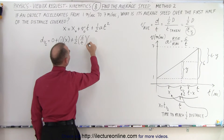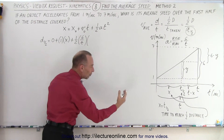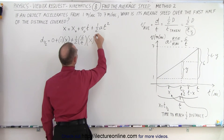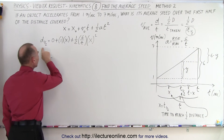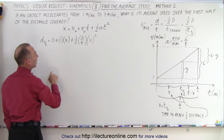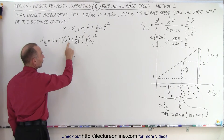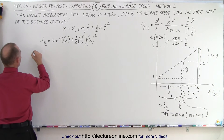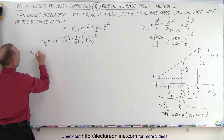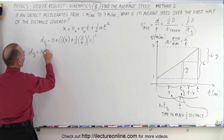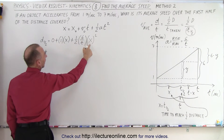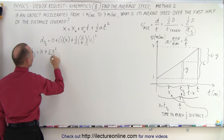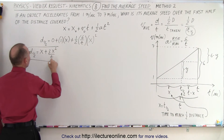We multiply the acceleration by the time to the halfway point squared. The halfway point time is X, so we get X squared. Simplifying: the distance to the halfway point equals X plus one-half times 6/T times X squared, which gives us X plus 3X²/T.